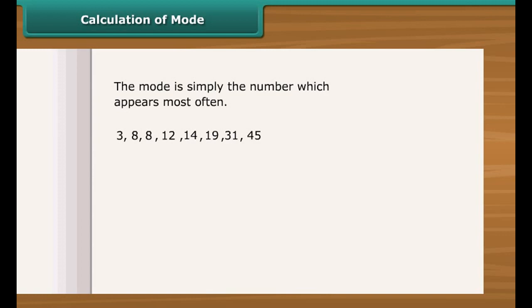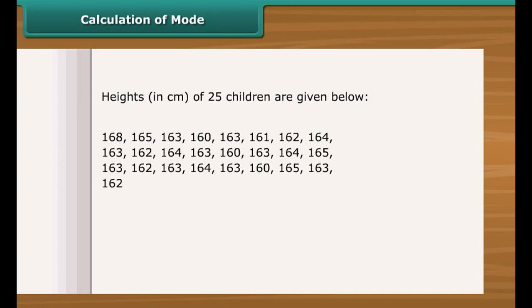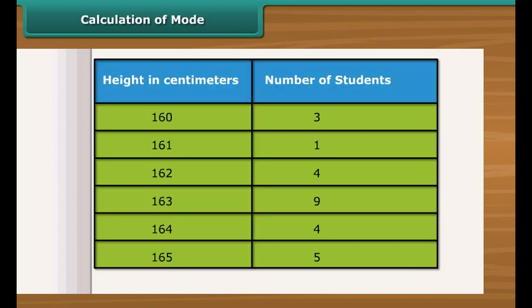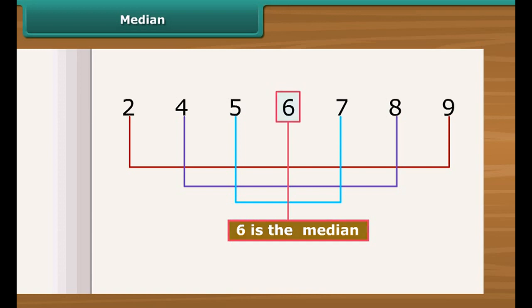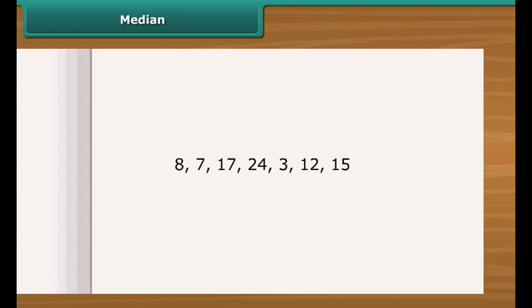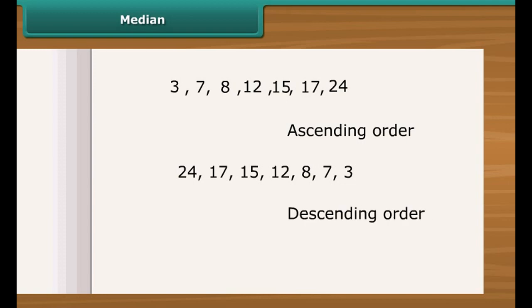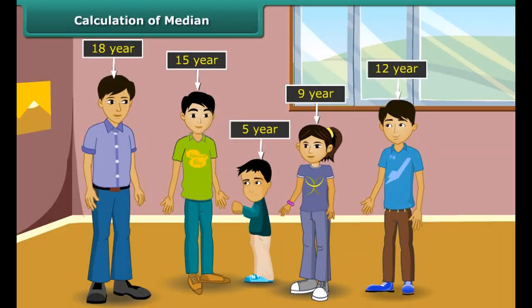The mode is simply the number which appears most often. See this example — we have a few numbers here. To find the mode, we need to first put the numbers in order, then count how many of each number. See which numbers appear most often — in this case, 8 appears 2 times, so the mode is 8. Look at this data showing the height of 25 children in a class. Let us find the mode of their heights. Put the numbers in order in a tabular form and count how many of each number. See, 163 appears 9 times, so the mode of the children's height is 163.